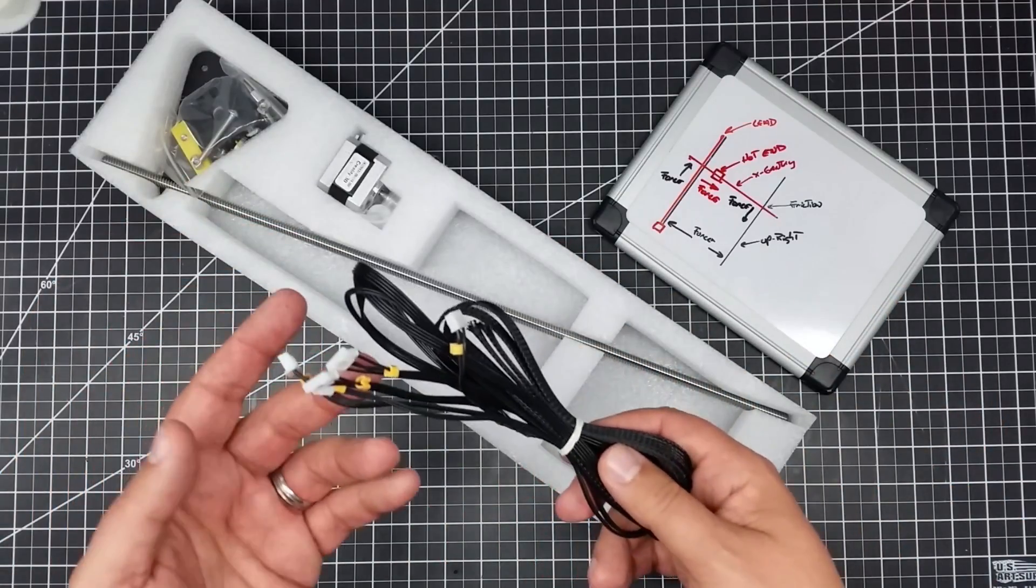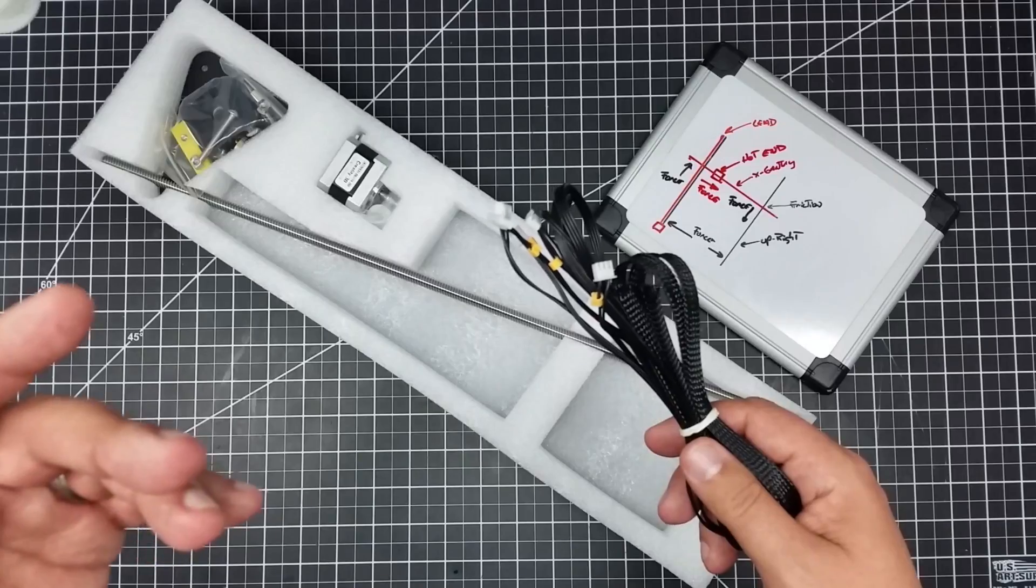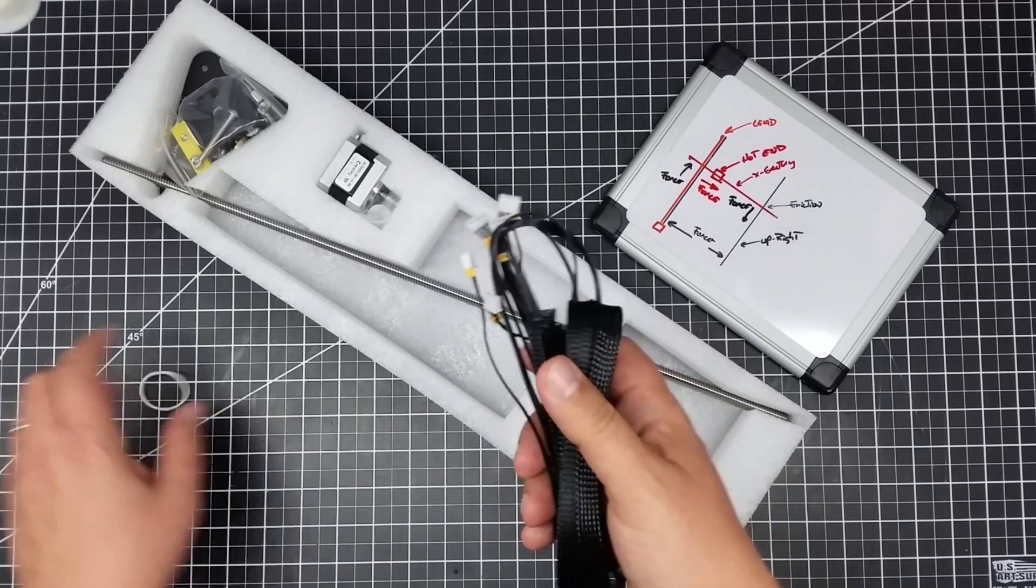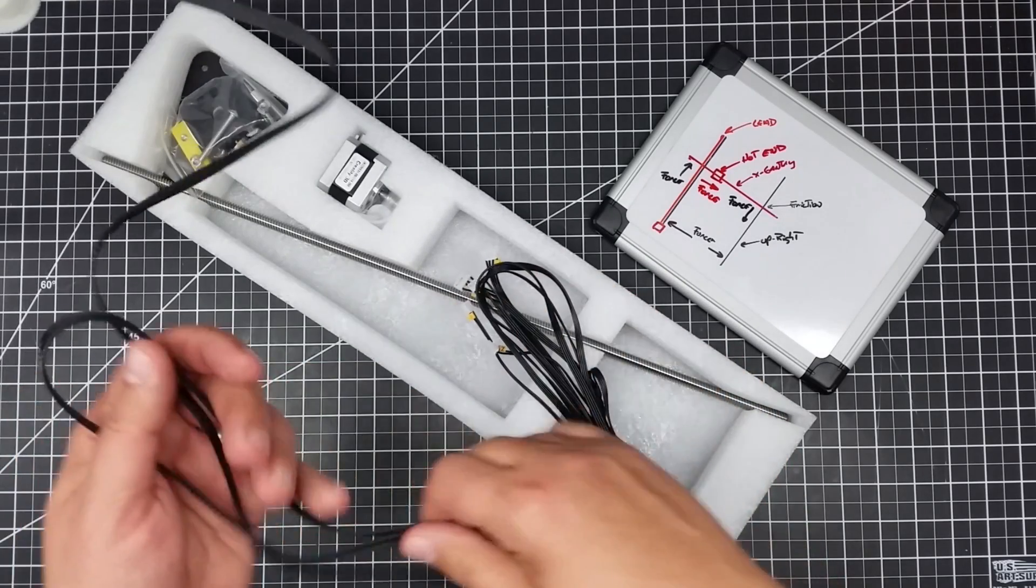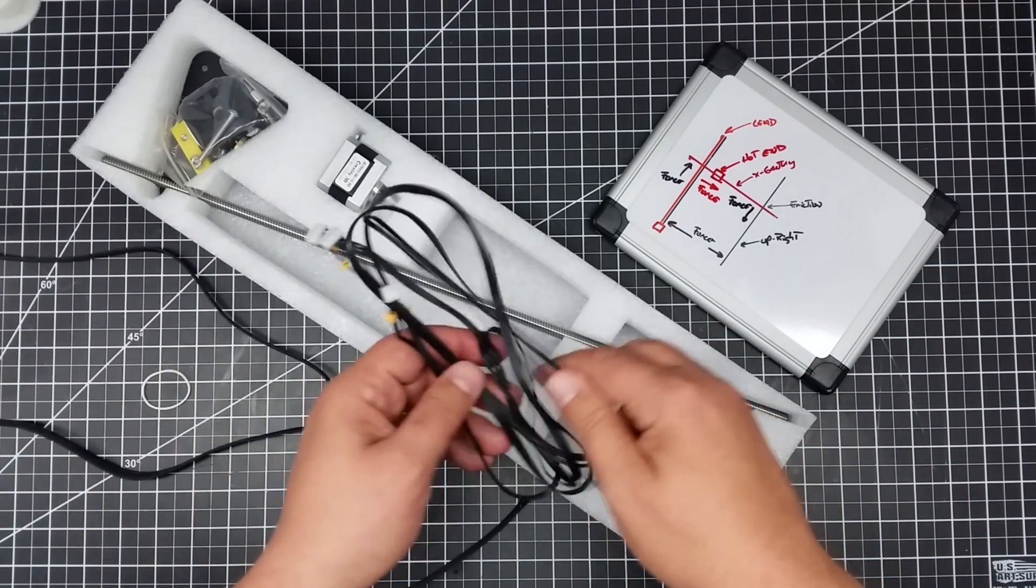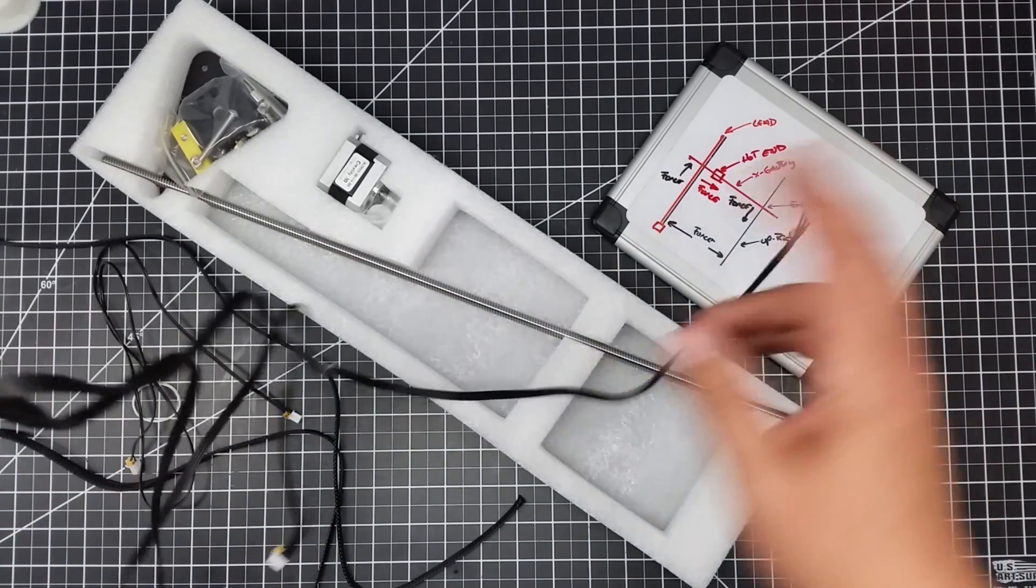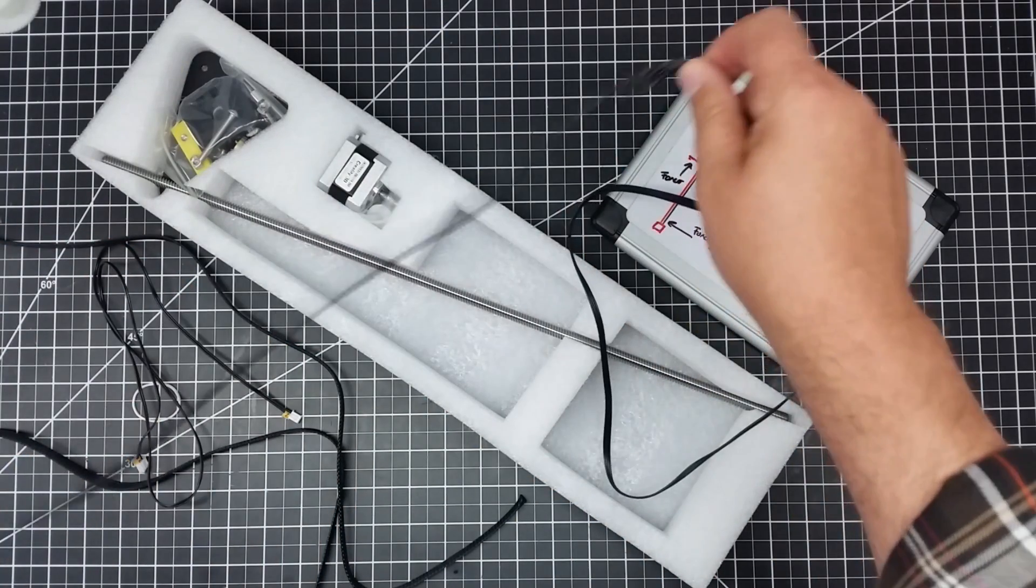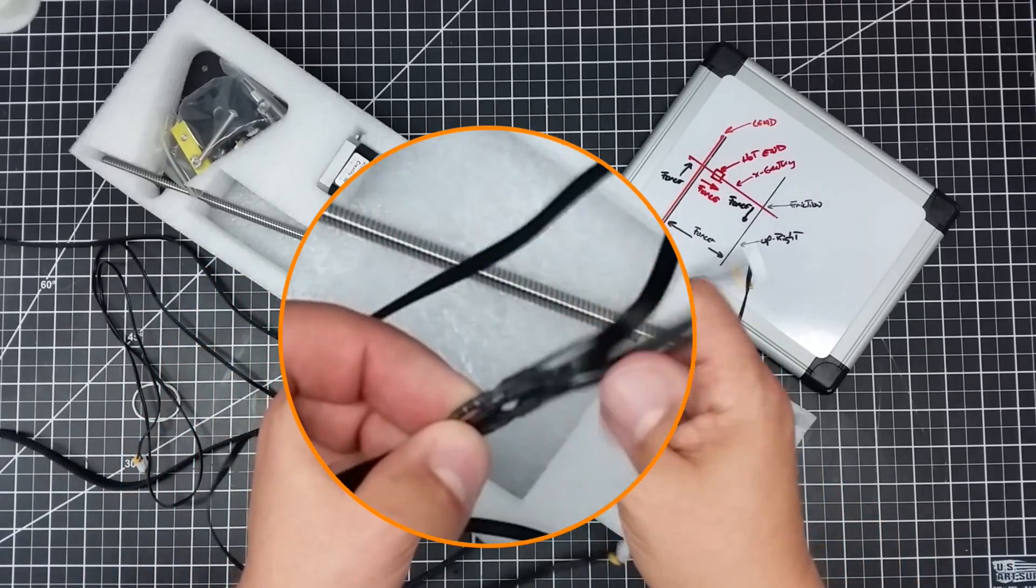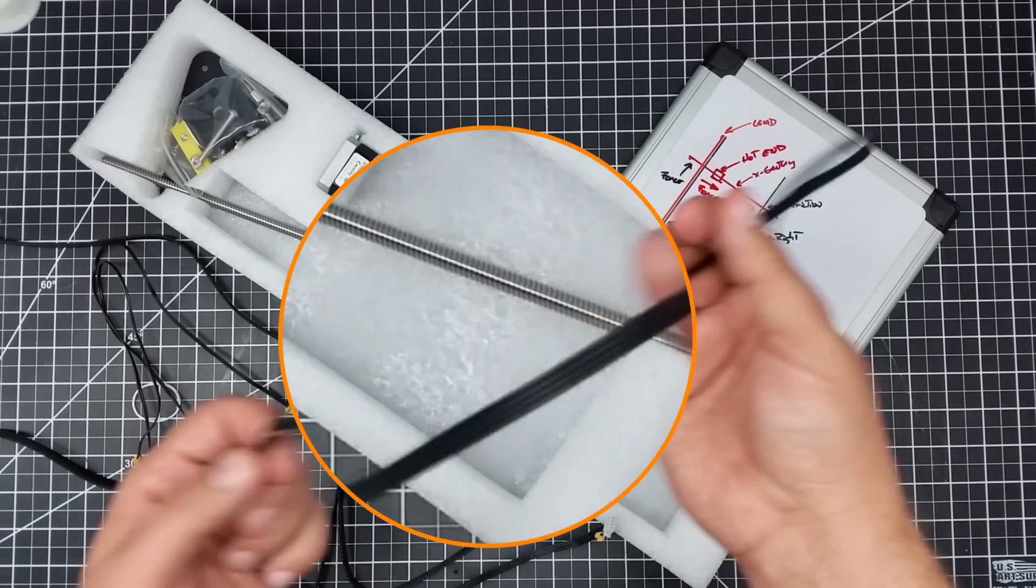One of the biggest things is we have a new set of cords because we need to obviously add in another Z motor. Let's take a look at this cord in a little bit more detail. Apparently they give us the braiding separately so we have to string on our own braiding. So we have the Z which comes in here. Obviously this must split off the motor.